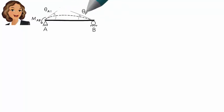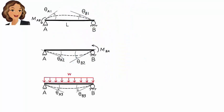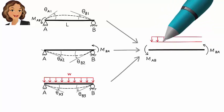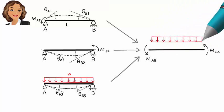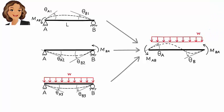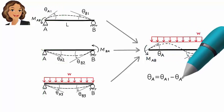Here is a summary of the three loading cases. If we superimpose these diagrams, we get the combined diagram. This means rotation at A equals the sum of the three individual rotations at A.